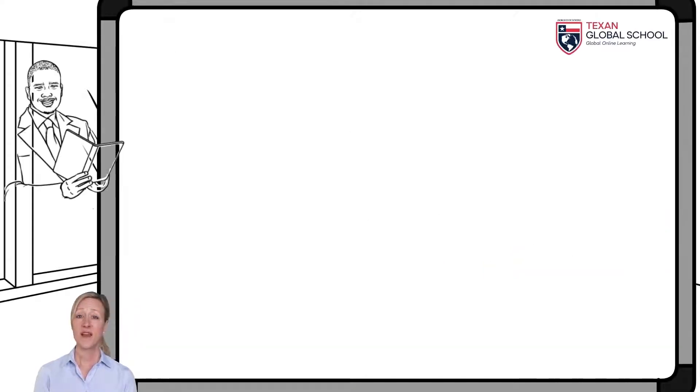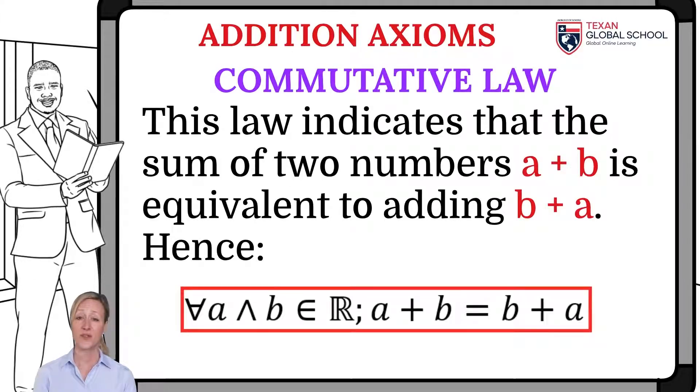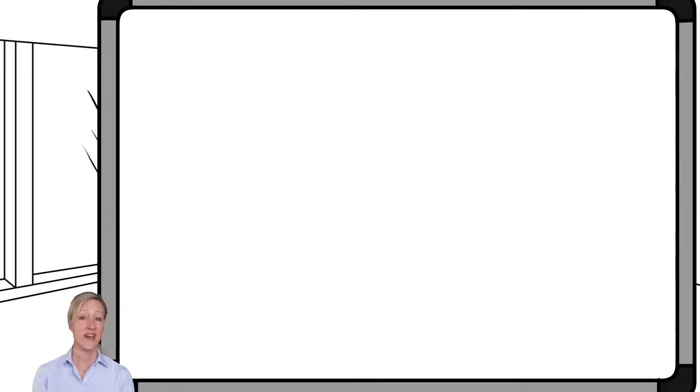The commutative law indicates that the sum of two numbers a plus b is equivalent to adding b plus a. Let's see an example with this axiom.